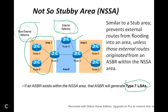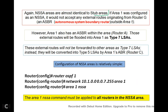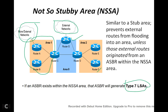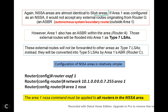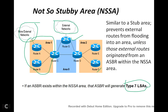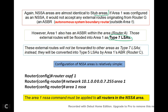So we have router A here with one external network connected to it. Routes from this network will flood into the area as Type 7 LSAs. However, these external routes will not be forwarded to other areas as Type 7 LSAs. The routes from router G or router A will not be forwarded to area 0 or area 2 as Type 7 — they will be converted into Type 5 by router C.